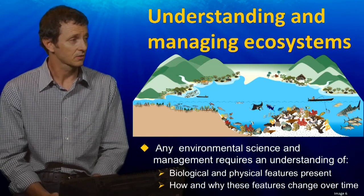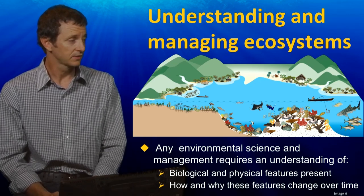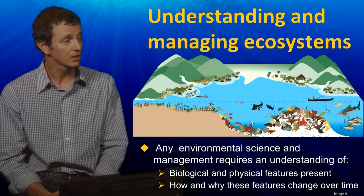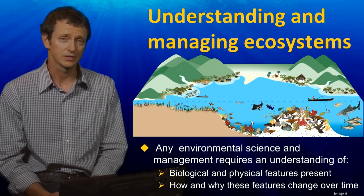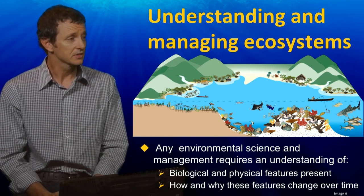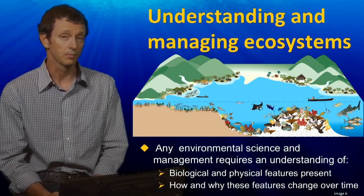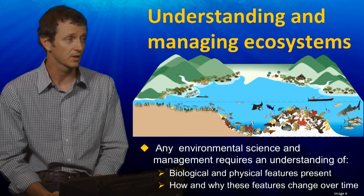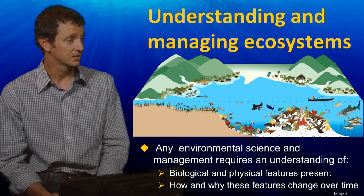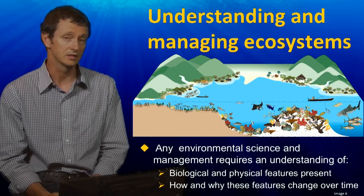Looking at this cross-sectional diagram, you see a coastal environment. Any type of scientific investigation, management agency, or local community responsible for that environment needs to know what's there and how it's changing over time. Remote sensing provides a way of understanding what's there in terms of the biological and physical features which are present, and most importantly, it lets us collect that information over time to see how the environment is changing, whether due to disturbances or human activities.